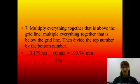Multiply everything together that's above the grid line, so all the numerators are multiplied together. Then, you're going to multiply all the denominators along the bottom. And if it makes you happy, underneath that 3.179 hours, you can put a 1 and make it look like the fraction. If that makes you get it right, it makes more sense to you, then put that 1 down.